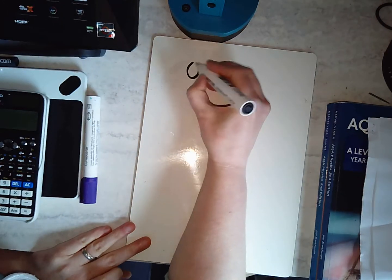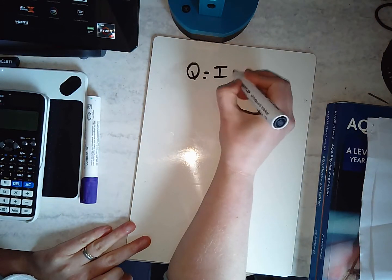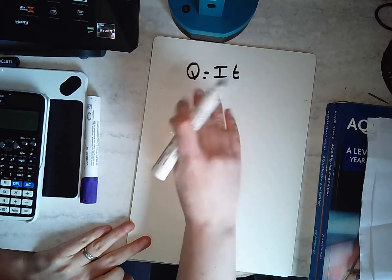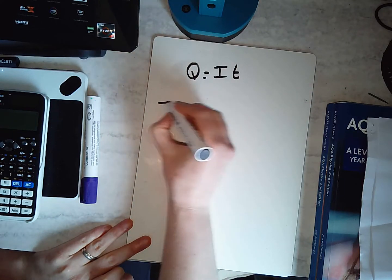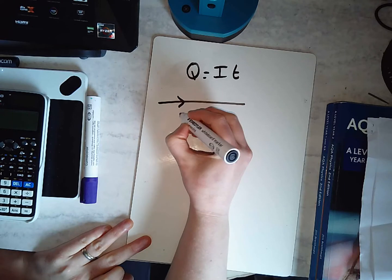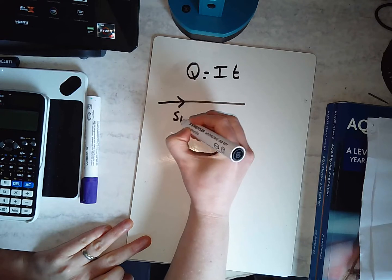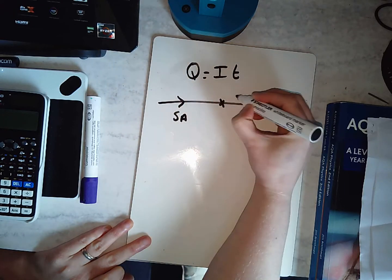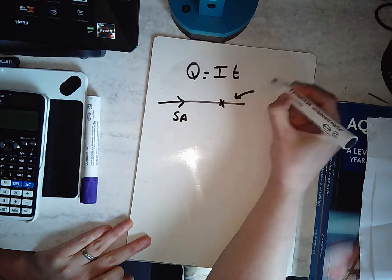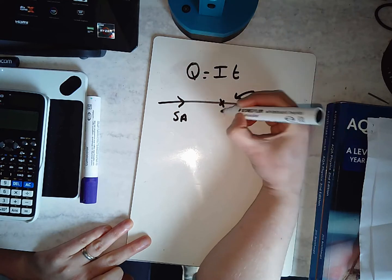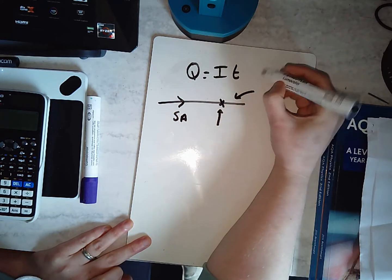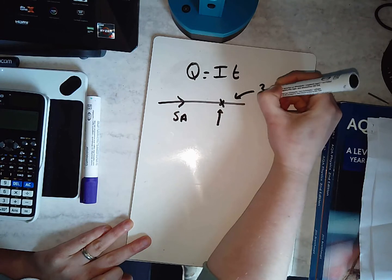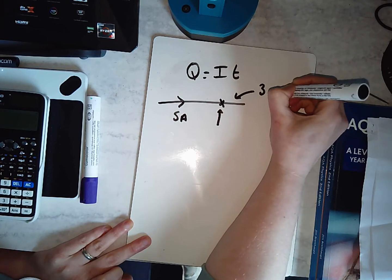Hi guys, we're going to talk about a new adaptation of Q = IT. You can work out the charge that passes a point. So I've got a current of 5 amps, and I'm looking at this point. I want to know how much charge passes this point in 3 milliseconds.